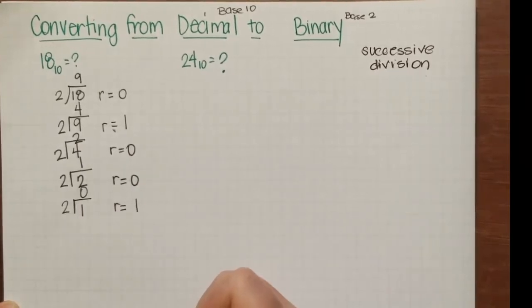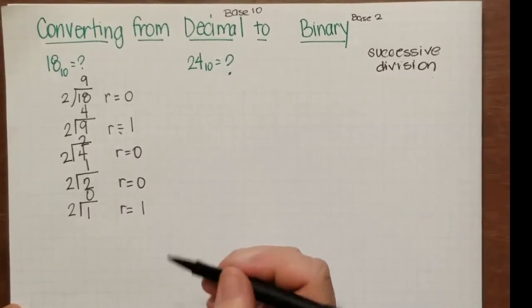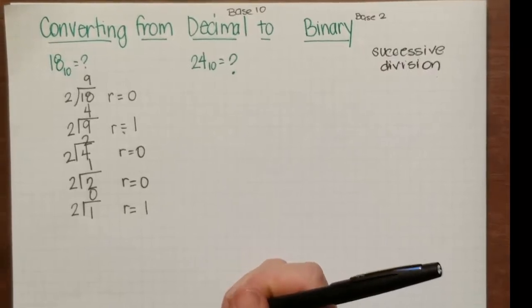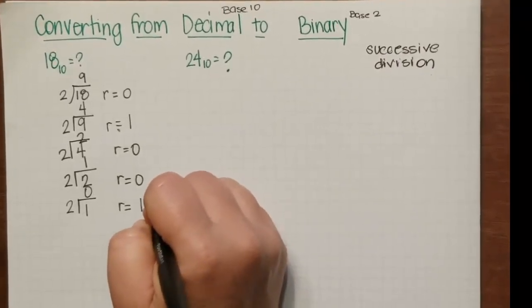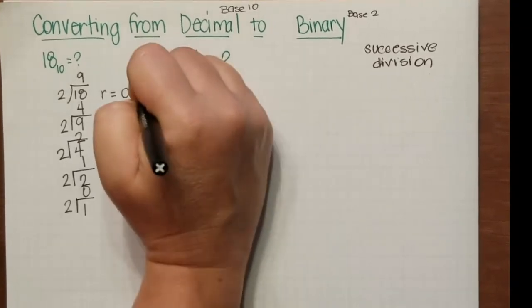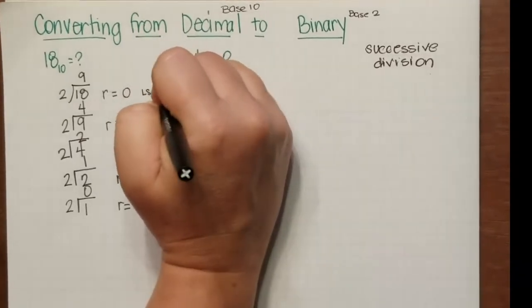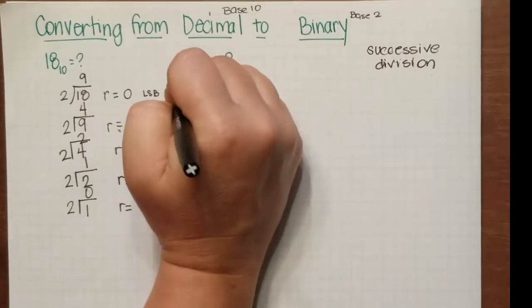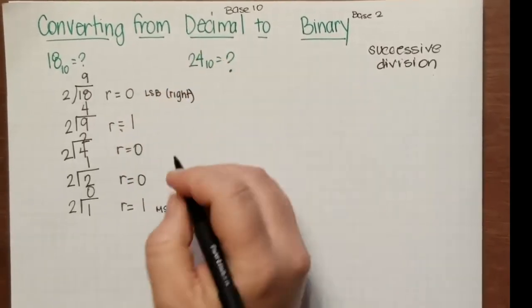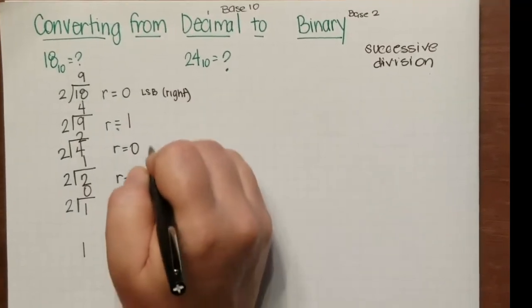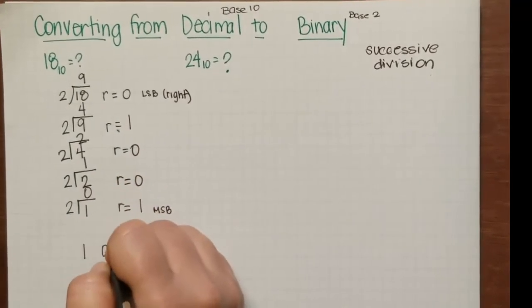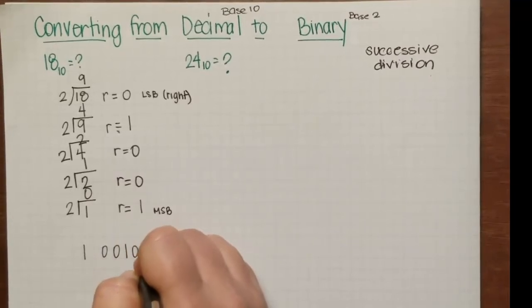Now you have to do the most significant bit and least significant bit. So this is the most significant bit, this is the least significant bit. This one goes on the right, that's the furthest right. So it would be 1, and remember we group in fours: 1 0 0 1 0 base 2.